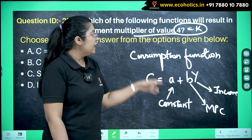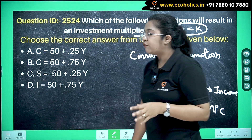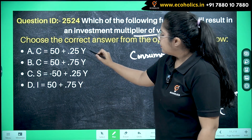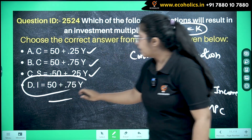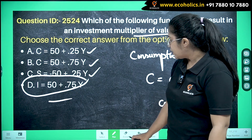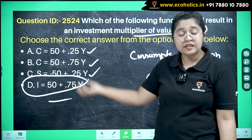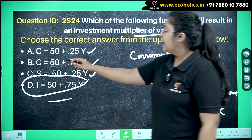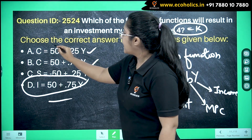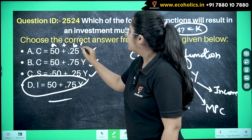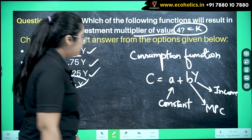Since the multiplier value is 4, we put it into the formula and check each option. For option A: C = 50 + 0.25Y. This is in the form a + bY, so b = 0.25, which is your MPC. Now let's see what k gives us.